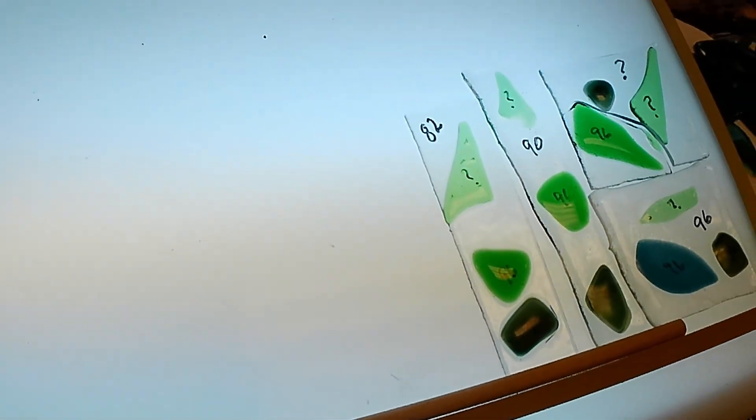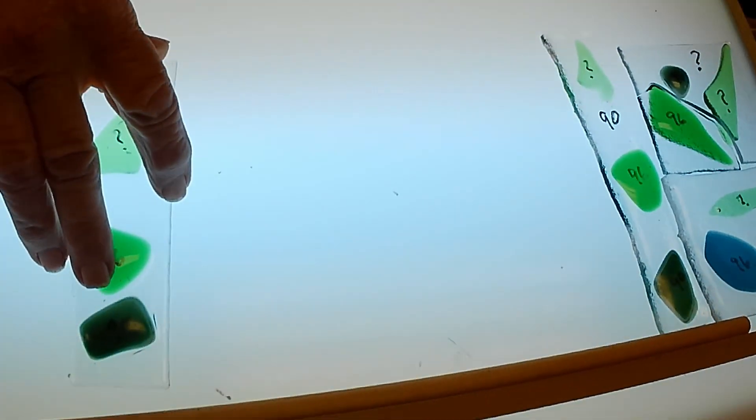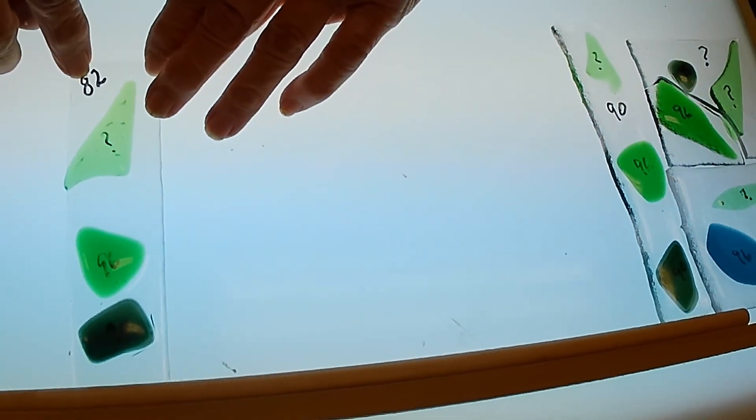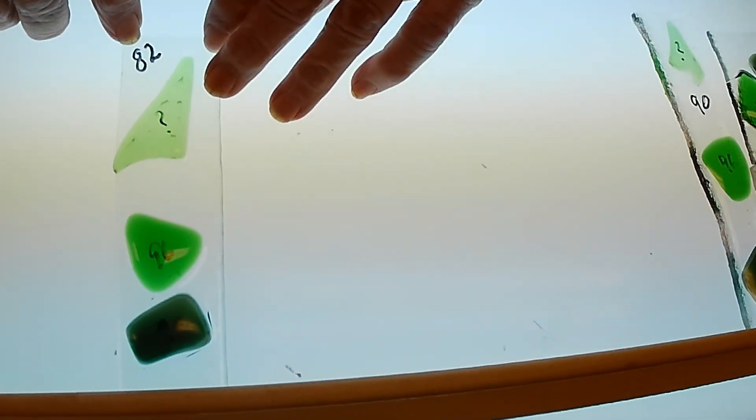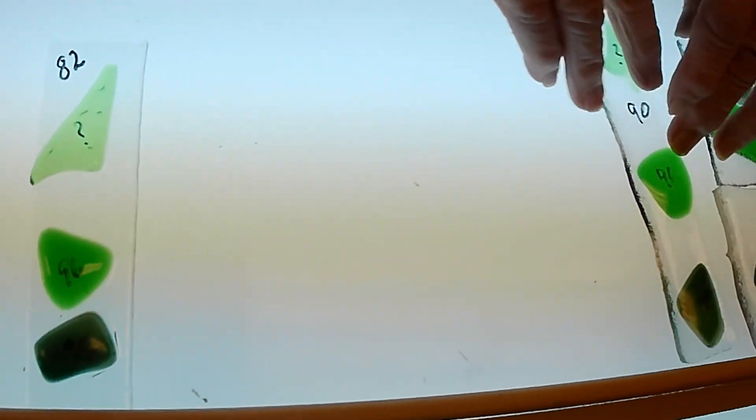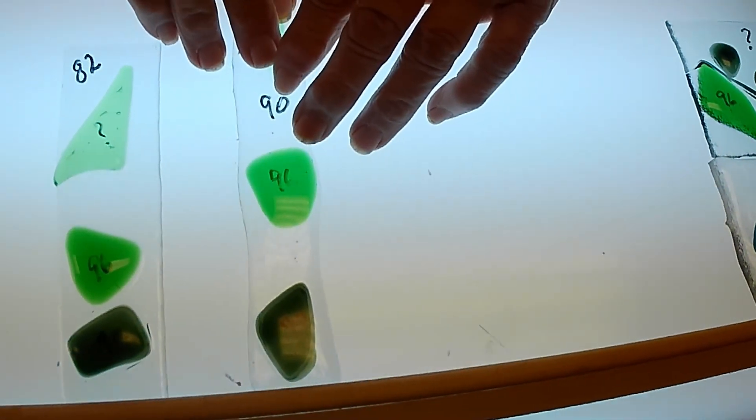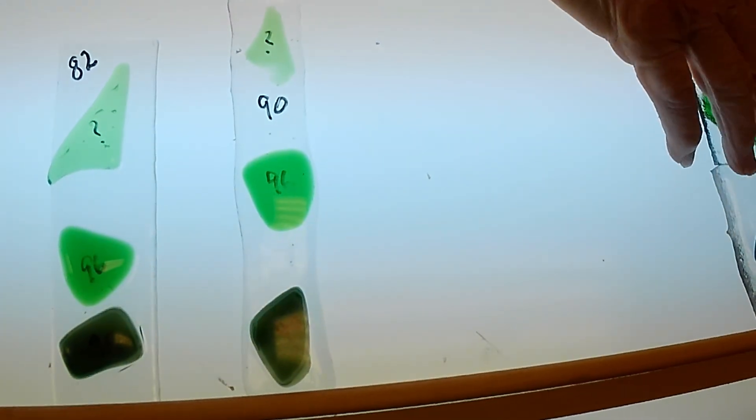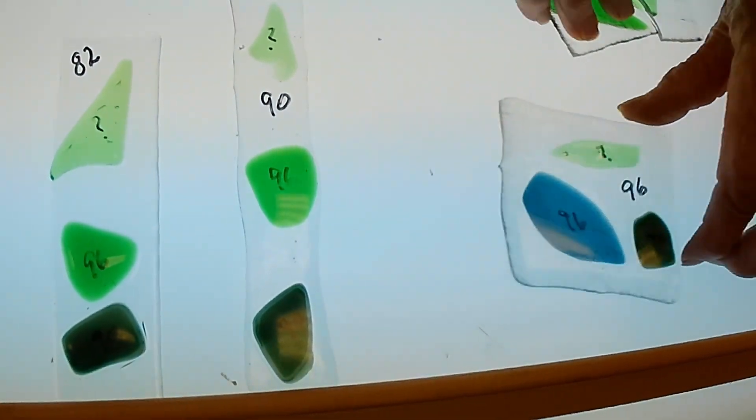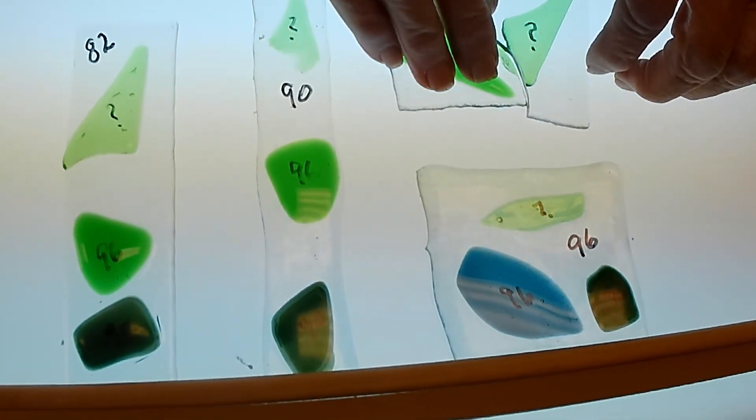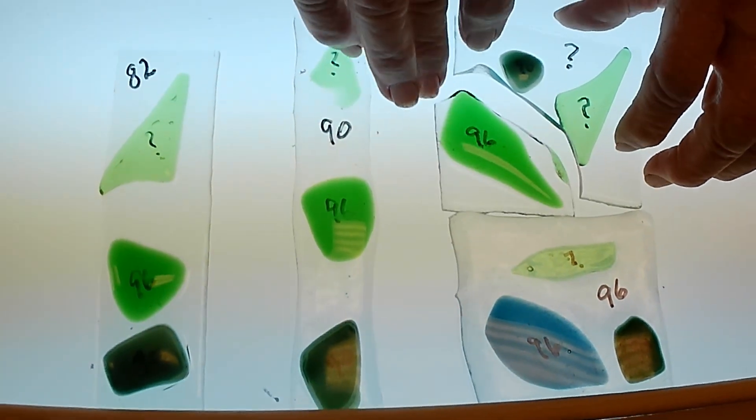Okay, now this is what we're going to do. I have a clear blank with a COE of 82, one of 90, one of 96, and one that I don't know.